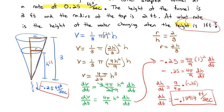And that's how we handle related rates: draw a picture, find a formula that relates the variables of interest — the variables that are changing specifically — then take the derivative with respect to time implicitly, plug in what we know, and solve for what we don't know. Practice a couple on the assignment and we will see you in class to discuss this further.